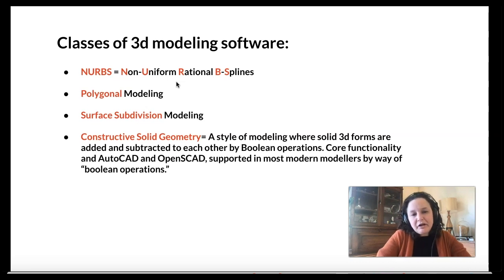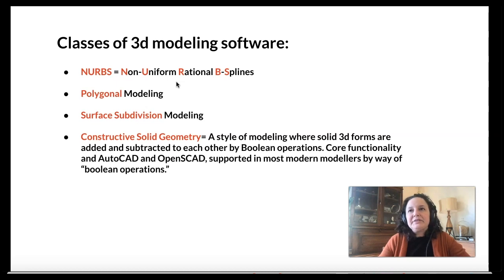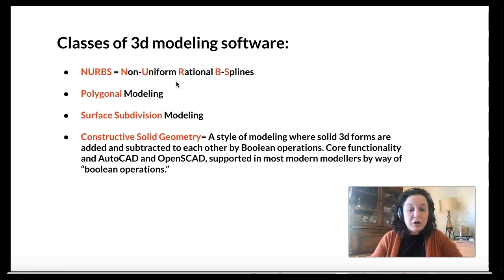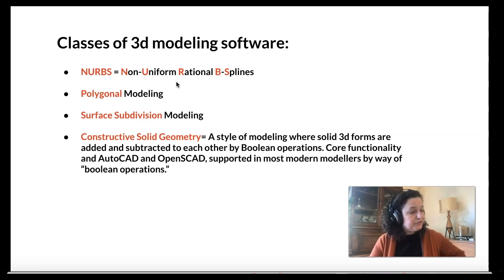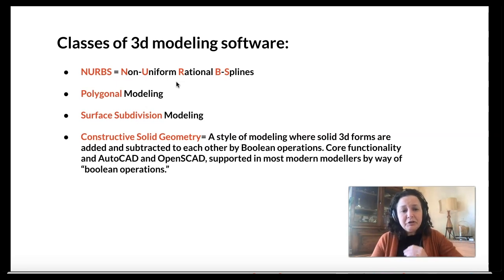Rhino uses the technology primarily called NURBS — Non-Uniform Rational B-Splines. What that means is it's basically a way of mathematically representing free-form curves. What you may have already seen in the first video is that when Rhino makes those surfaces, they're extremely smooth and they're extremely precise.